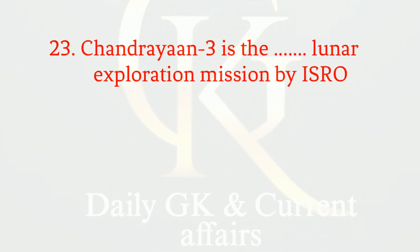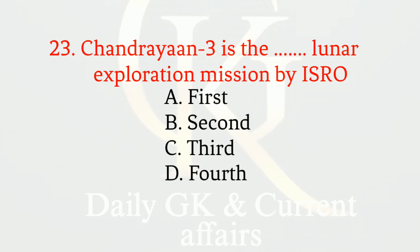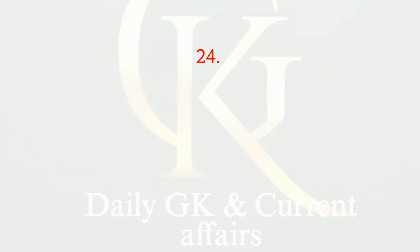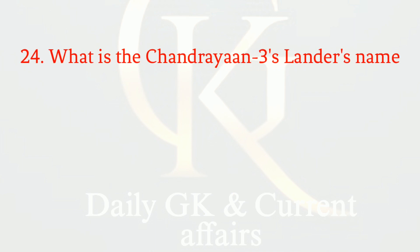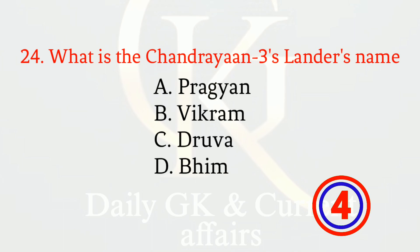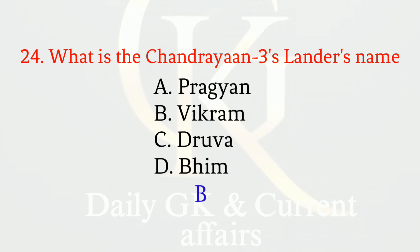Chandrayaan-3 is the blank lunar exploration mission by ISRO — the correct option is C: third. What is Chandrayaan-3's lander's name? The correct option is B: Vikram.